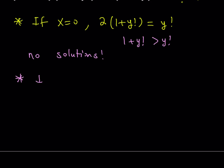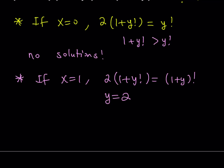How about if x is equal to 1? If x = 1, then 1! = 1, so it's going to give me 2 again, times (1 + y)!. On the right-hand side, I should be getting (1 + y)!. By testing some values, you're going to notice that y = 2 is a solution. Are there any other solutions? That's what we need to look at. So (1, 2) is going to be one of the solutions as an ordered pair. Let's check if there are any other values of y that could work.